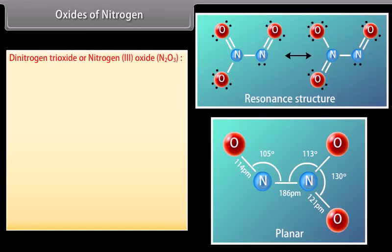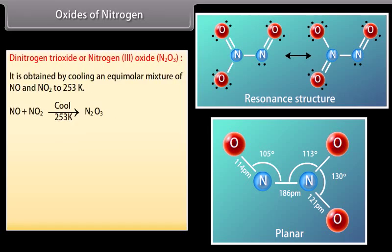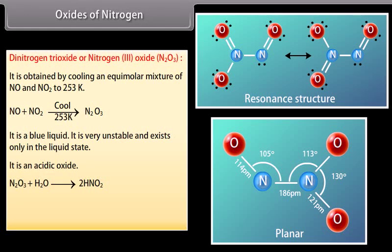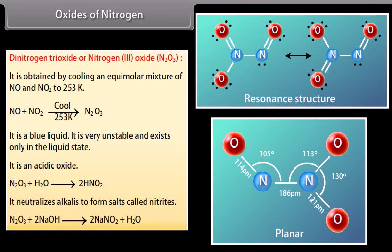Dinitrogen trioxide (N2O3, nitrogen 3 oxide) is obtained by cooling an equimolar mixture of NO and NO2 to 253 Kelvin. It is a blue liquid, very unstable, and exists only in the liquid state. It is an acidic oxide that neutralizes alkalis to form salts called nitrites.